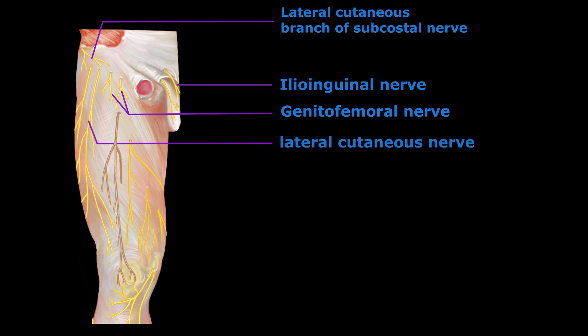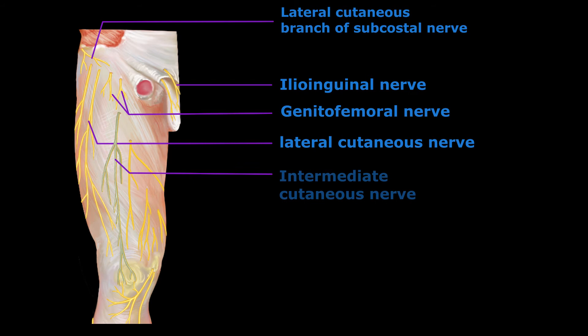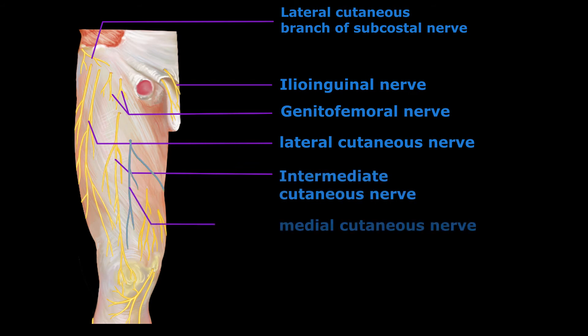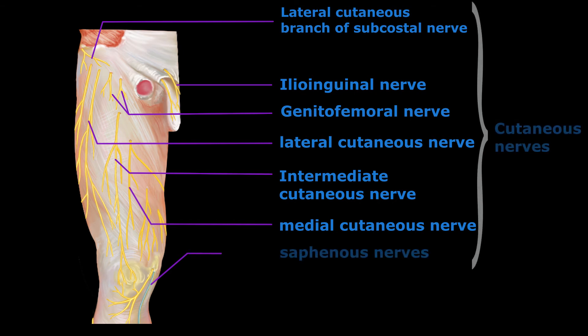The fourth nerve is the intermediate cutaneous nerve, and the fifth is the medial cutaneous nerve of the thigh. The sixth is the saphenous nerve. These are the cutaneous nerves of the front of the thigh.